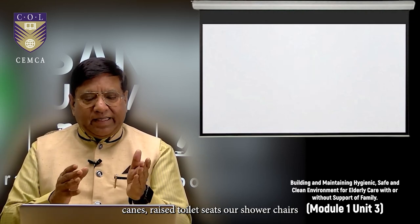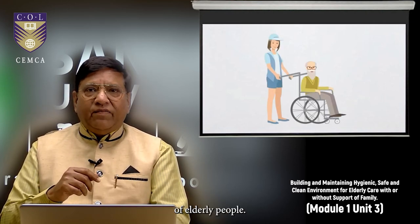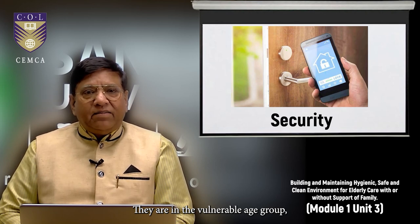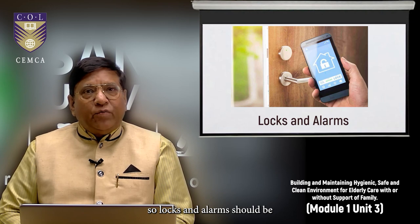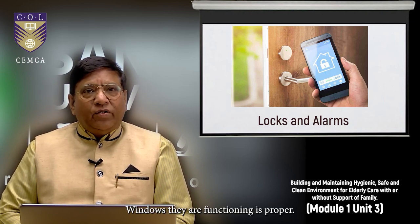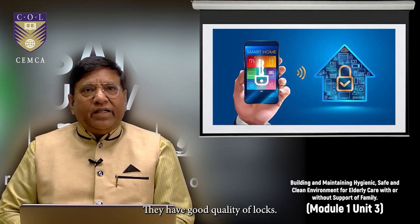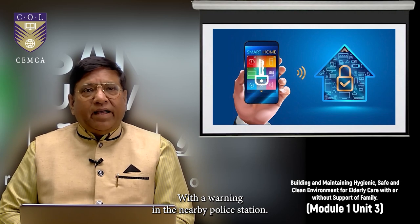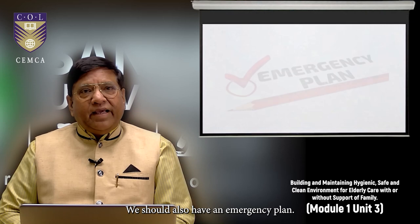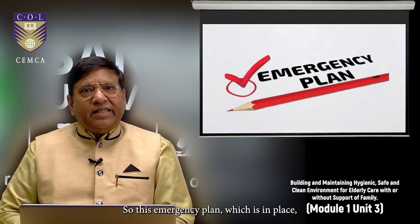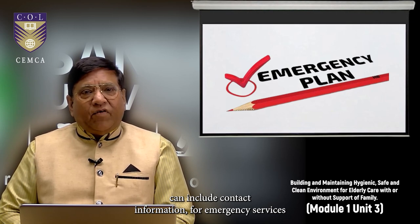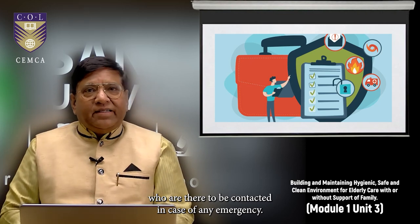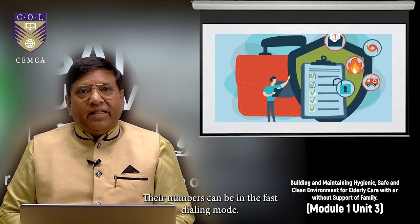Then we can think in terms of using some adaptive aids. So devices such as walking canes, raised toilet seats or shower chairs may be considered for easier mobility of elderly people. Security is of utmost importance. We can consider installing alarms or a good home security system with a warning in the nearby police station. We should also have an emergency plan.